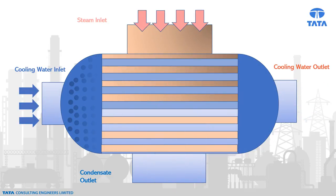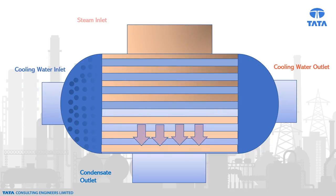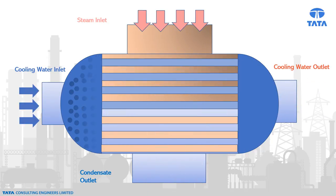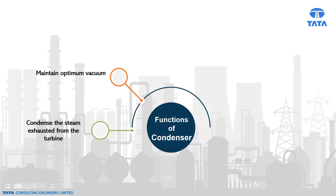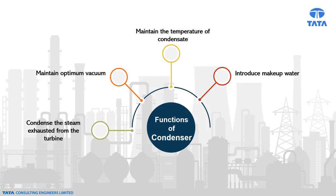The performance of the condenser has a significant role in deciding the plant heat rate or efficiency. The main functions of the condenser are to condense the steam exhausted from the turbine, to maintain optimum vacuum, to maintain the temperature of condensate, to introduce makeup water, and to facilitate the extraction of air and other gases.